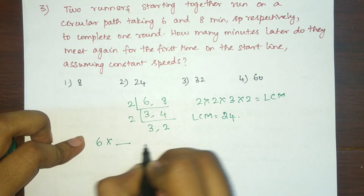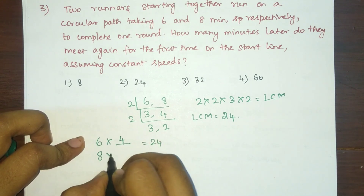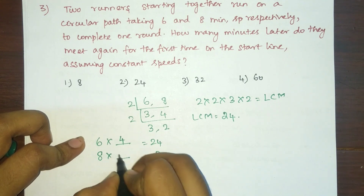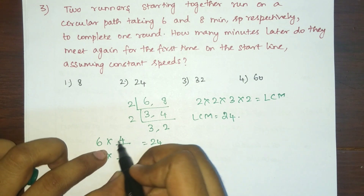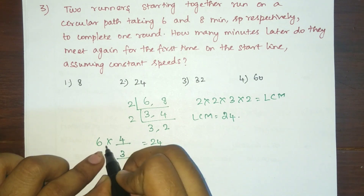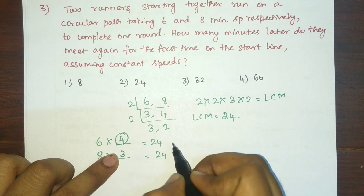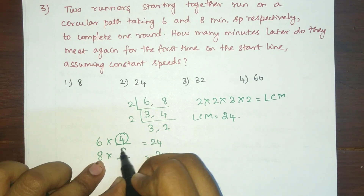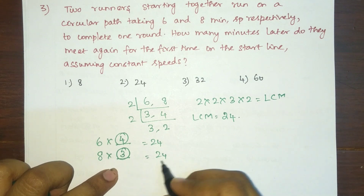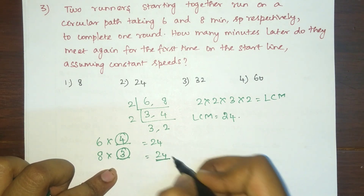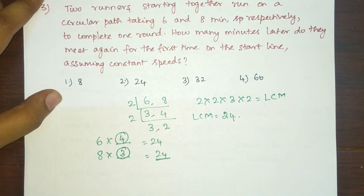Verifying: 6 × 4 = 24, so the 6-minute runner completes 4 rounds in 24 minutes. 8 × 3 = 24, so the 8-minute runner completes 3 rounds in 24 minutes. At the 24th minute, both runners meet for the first time on the start line. So option two is the right answer.